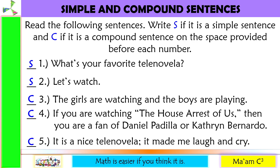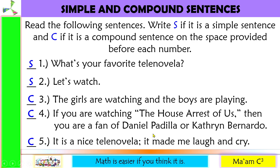To differentiate: a simple sentence contains one independent clause, meaning it expresses only one complete thought, just like numbers one and two. A compound sentence connects two independent clauses, like 'the girls are watching' and 'the boys are playing' — two independent clauses connected by the word 'and.' The same is true for numbers four and five.